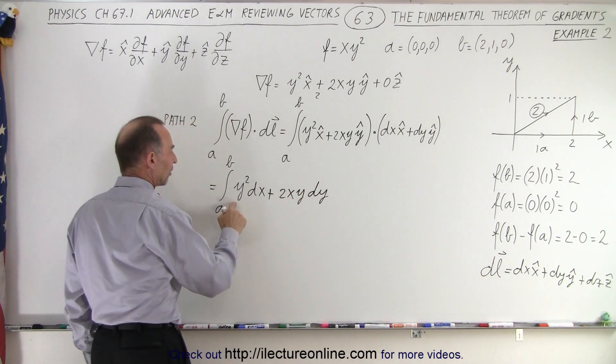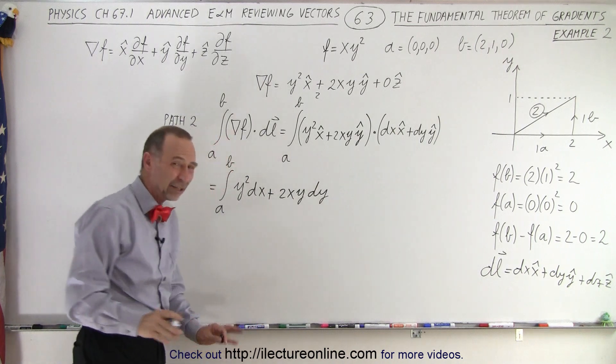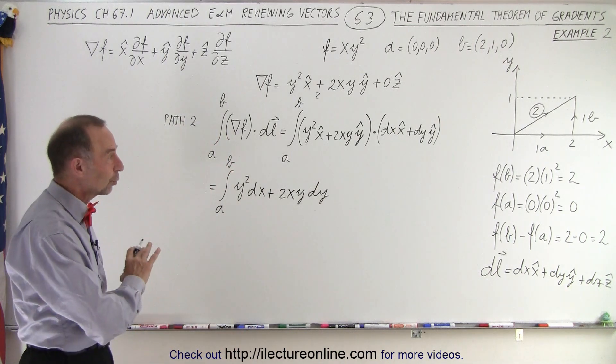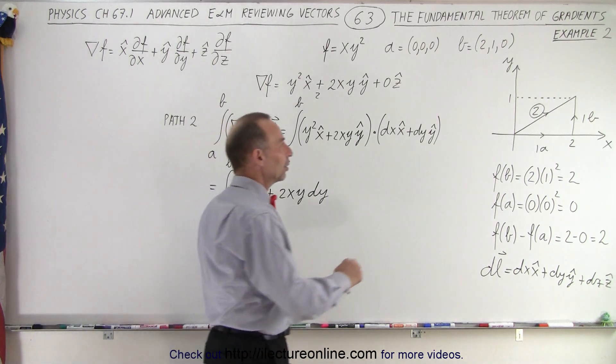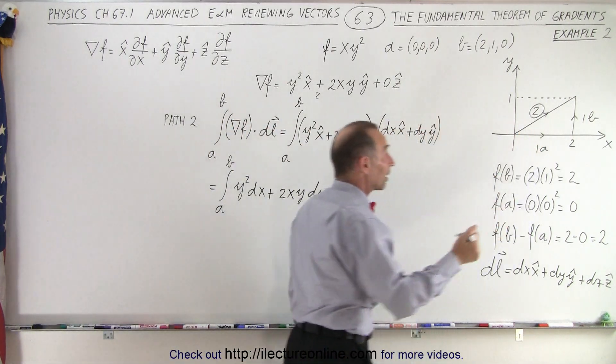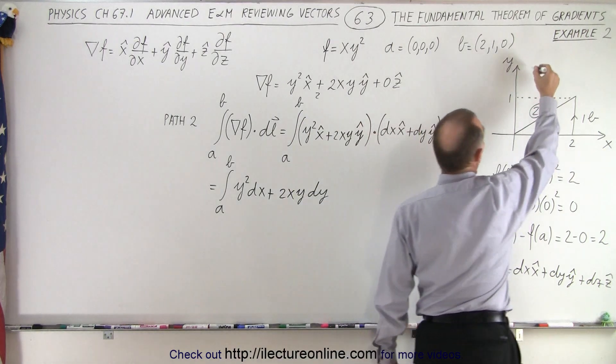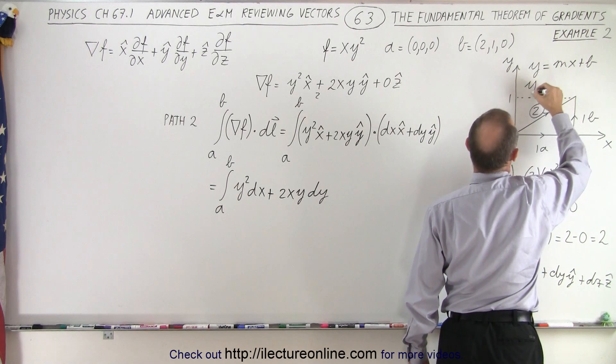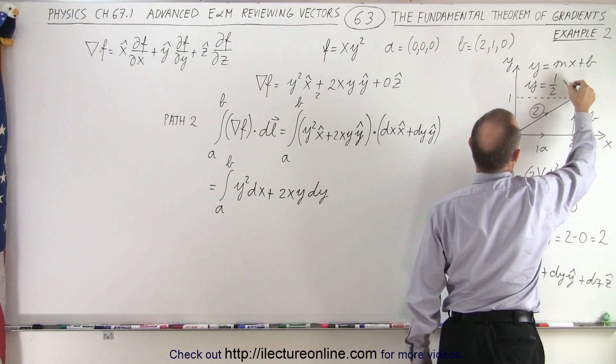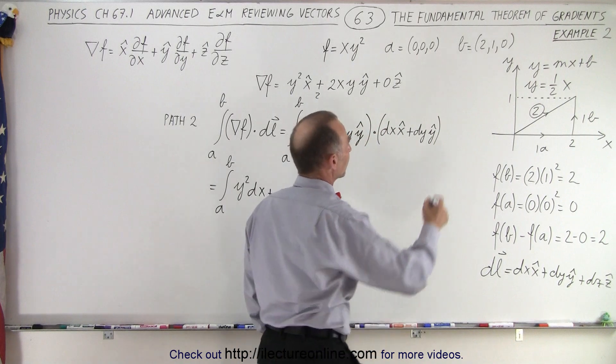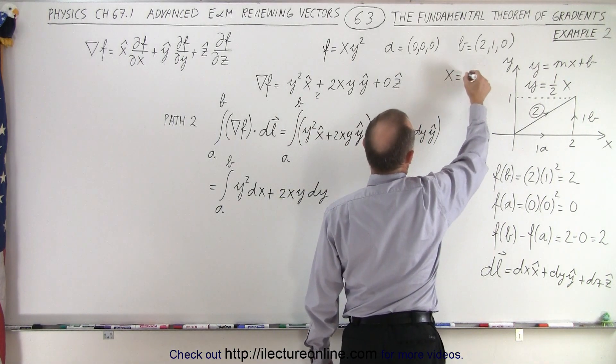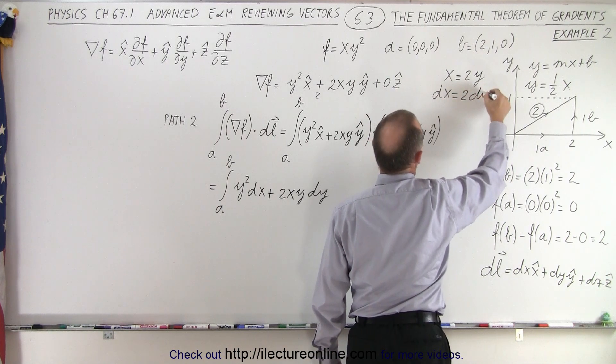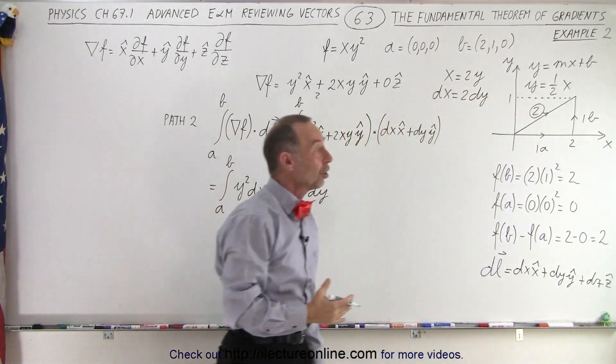Now of course here we have y squared dx and 2xy times dy, that doesn't work very well, so we have to find some relationship between x and y to eliminate one of the two variables. If I take a look at this line that looks like a straight line, we could write that y equals one half x or x equals 2y, which means that dx equals 2dy.